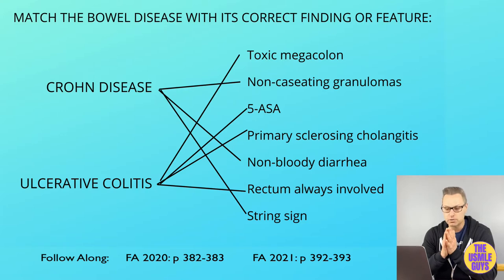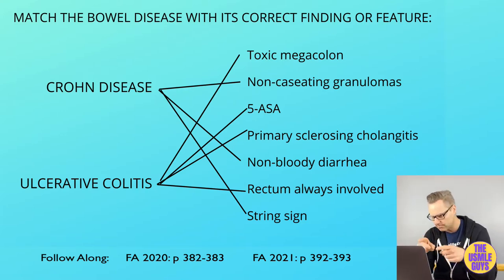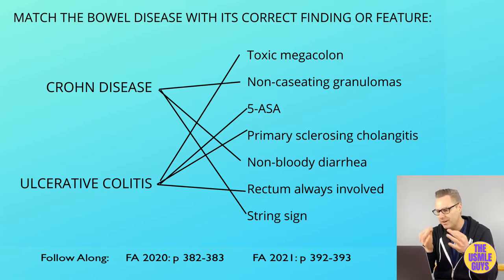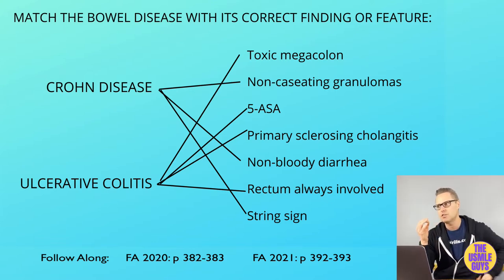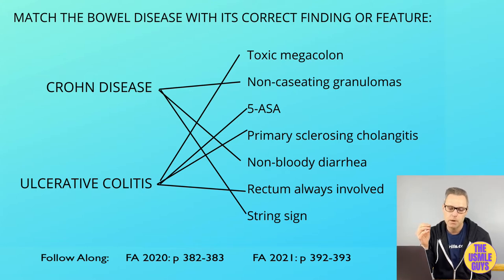Regarding presentations, ulcerative colitis is associated with bloody diarrhea, whereas the diarrhea in Crohn's disease isn't always going to be bloody — it can be non-bloody. That's a really important point to keep in mind if you encounter significant GI problems in a vignette.